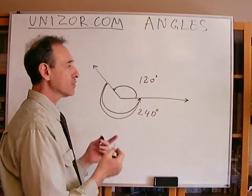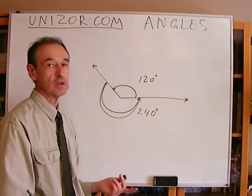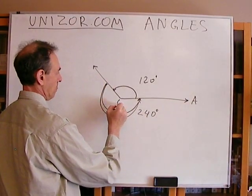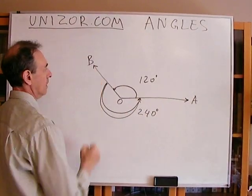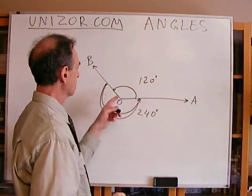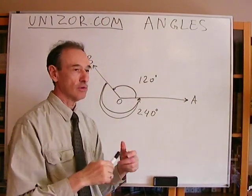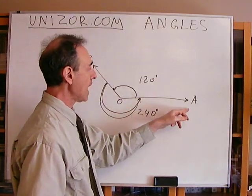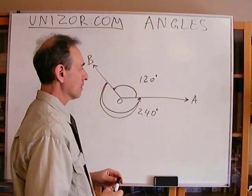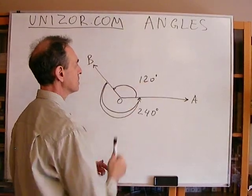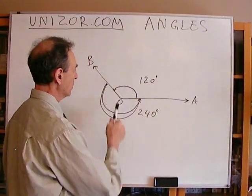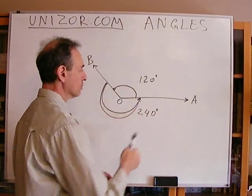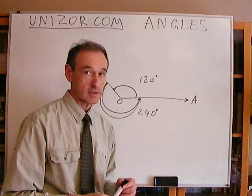So how can we say which angle do we mean in this particular case? If one ray is OA and another is OB, we actually have to know from which to start. So if we start from OA and move counterclockwise, we have a 120 degree angle. But if we start from OB and go to OA, it will be 240 counterclockwise again.